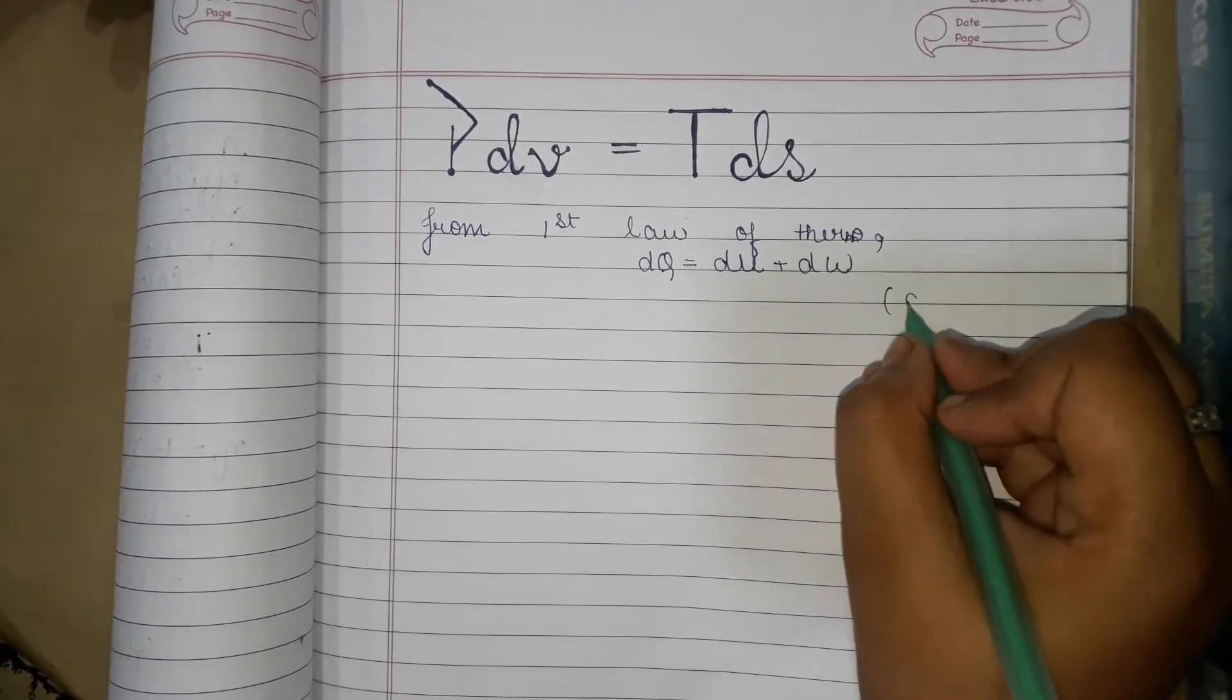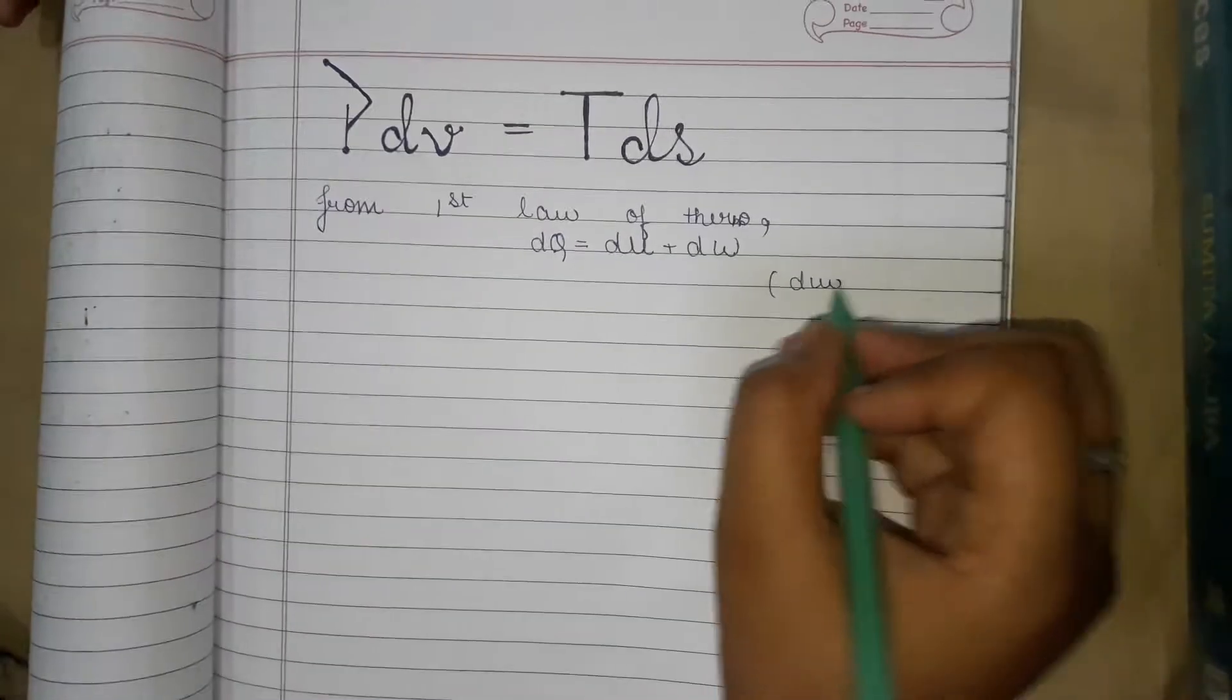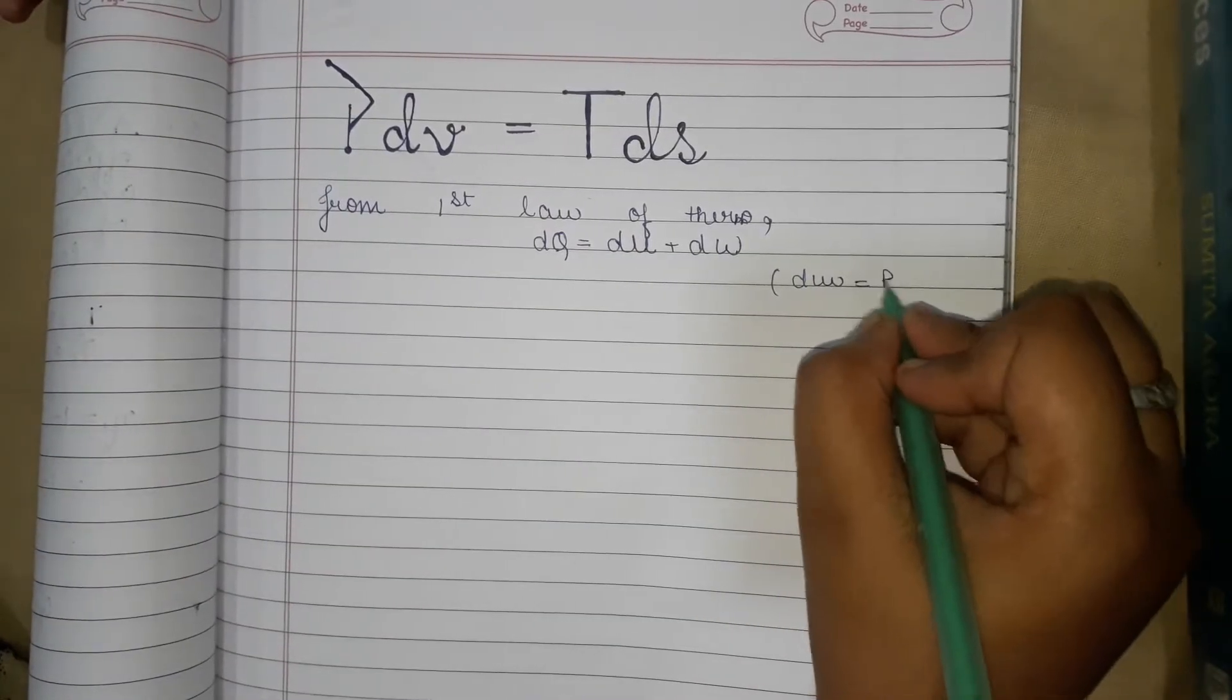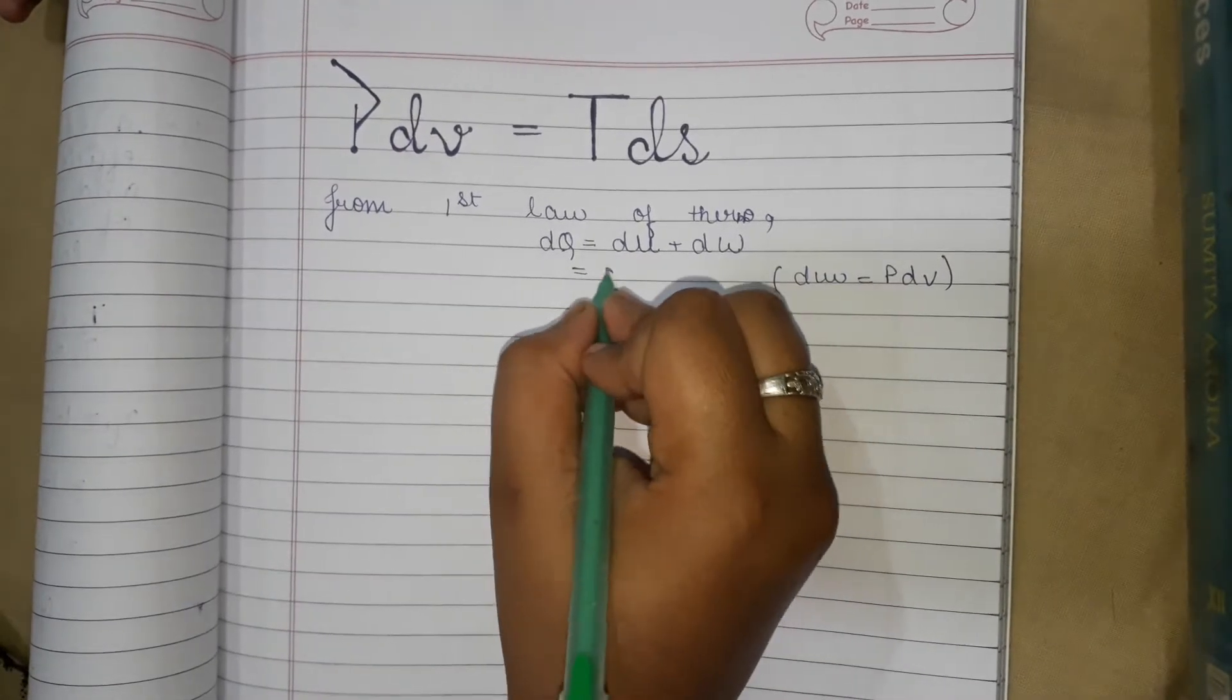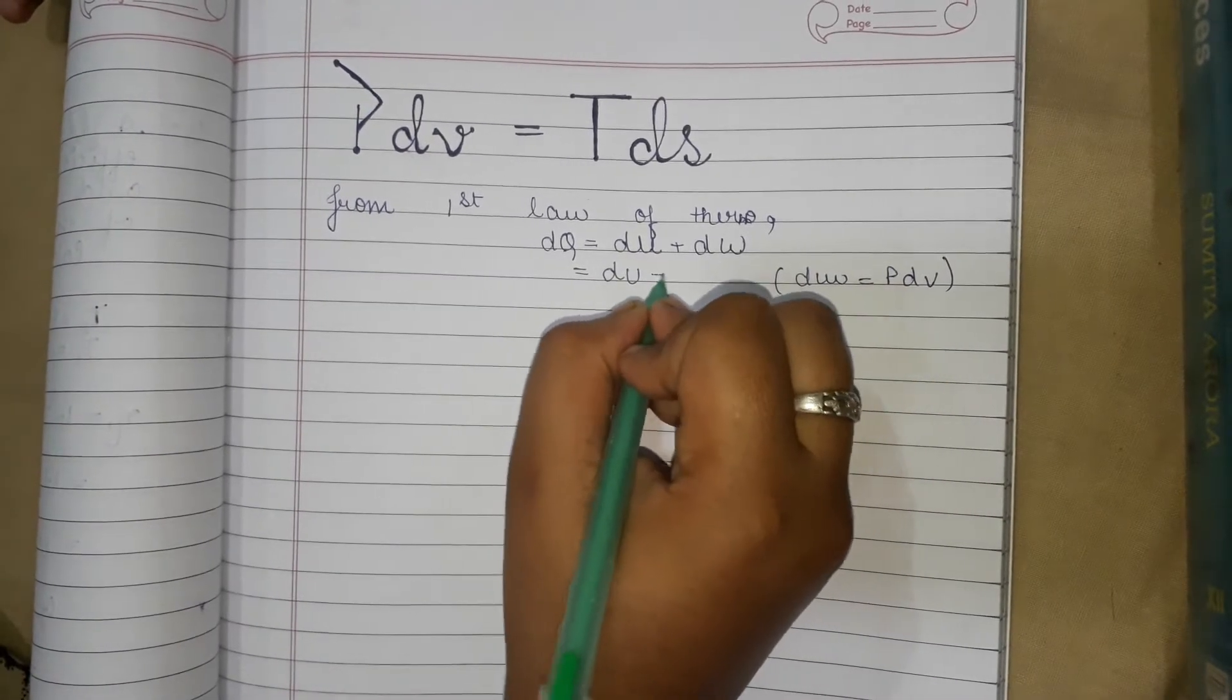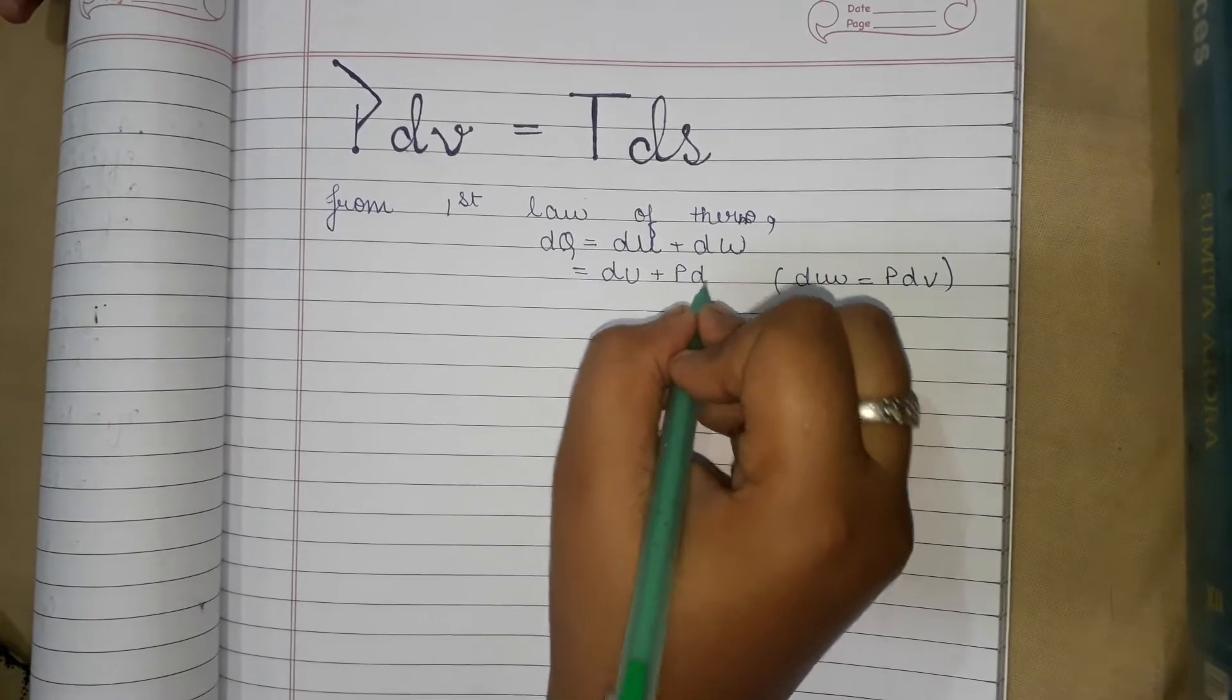We know that dw is equal to PdV. So replacing dw by PdV, we get dq equals du plus PdV.